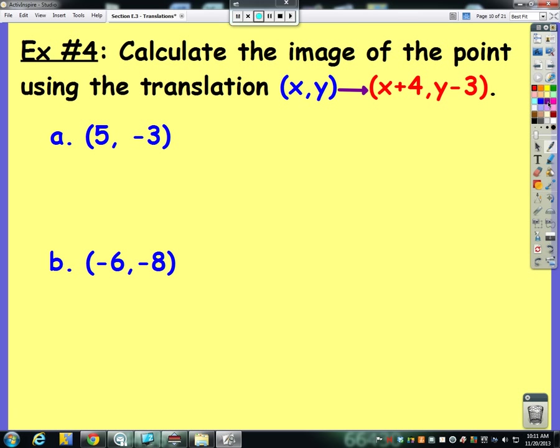All right, last example we're going to do together. So now, instead of giving you the graph, I've just given you some points, and I want you to figure out where is the image of this pre-image point going to be at, given this rule. According to our rule here, we've got a plus four in the x direction, which means we're going to move to the right, since it's positive. And we've got a minus three in the y direction, so we're going to move down three.